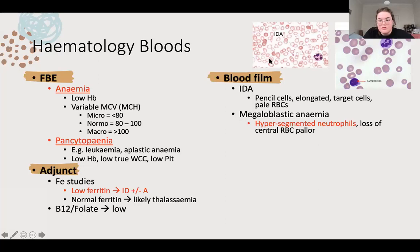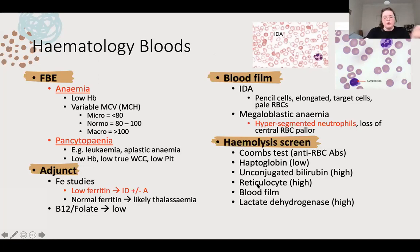In terms of your macrocytic megaloblastic, you've got this multi-lobed neutrophil - if you see that on a blood film, look to the neutrophil. You can also see that these are big fat juicy red blood cells, so very macrocytic. A haemolysis screen will be covered shortly. If you have found a pancytopenia, you're going to order a bone marrow biopsy as well as a blood film.